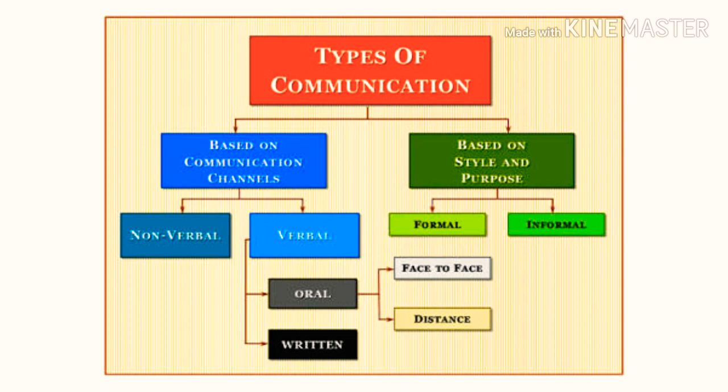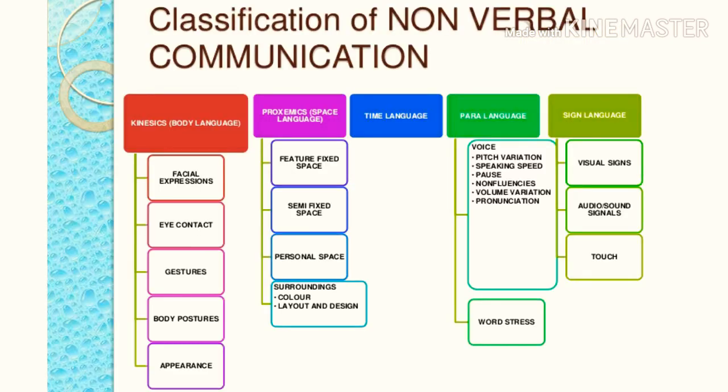Informal communication is casual communication which does not follow any rules and regulations of communication. In the next lecture, we will understand the seven C's of communication and the barriers of communication. I hope you have understood the communication process — do like and subscribe.